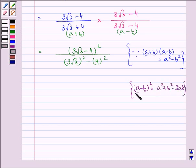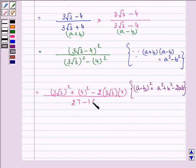Right. So we will be using this identity over here to solve it. We have a square plus b square minus 2 a into b upon, where our a is 3 root 3 and b is 4. Upon simplifying it we have 27 minus 16.